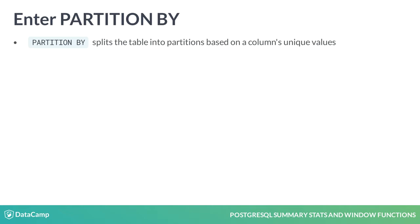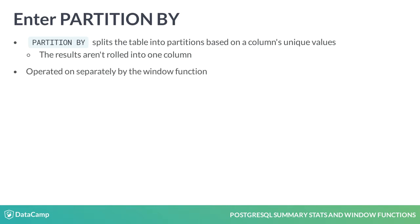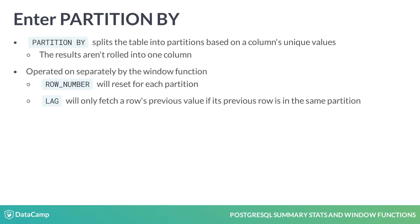Unlike GROUP BY, however, the results of a window function with PARTITION BY aren't rolled into one column. Partitions are operated on separately by the window function. For example, ROW_NUMBER will reset to one for each partition's first row, and LAG will only fetch a row's previous value if its previous row is in the same partition.